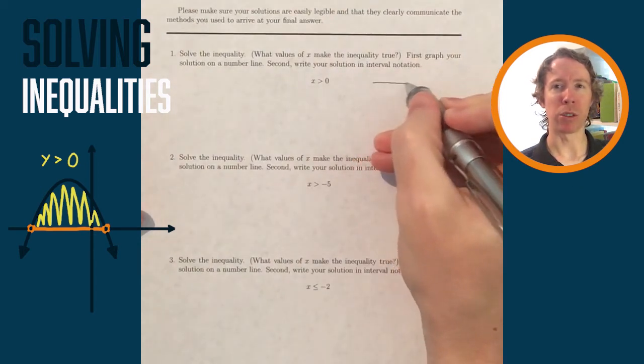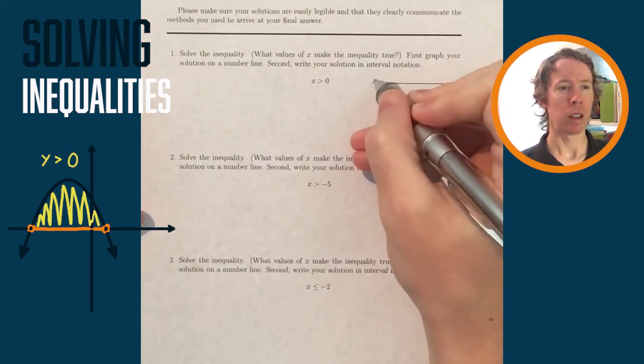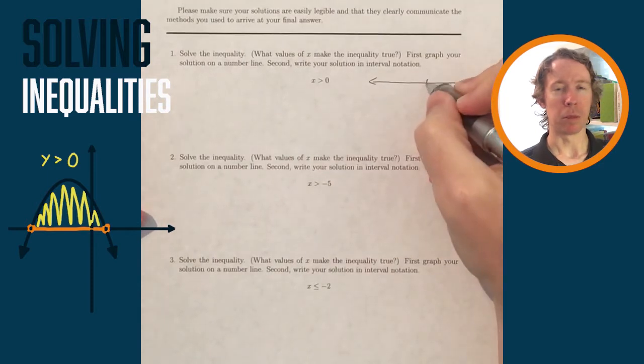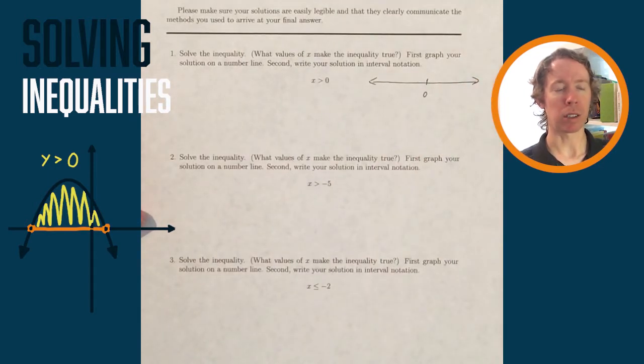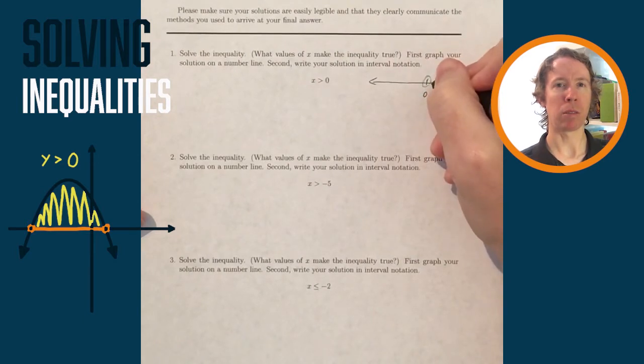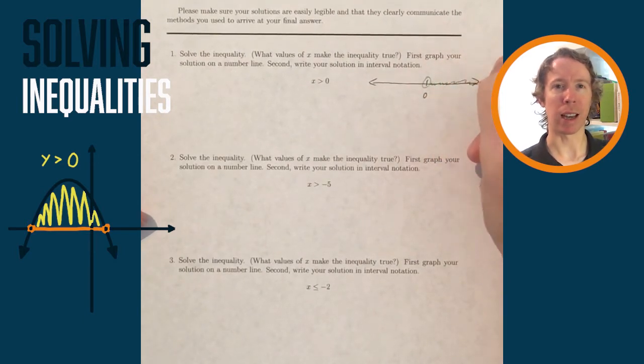I'm supposed to say what x values make this inequality true, and the inequality is very simple: x greater than zero. So first, to sketch that on a number line, remember a number line just looks like the x-axis.